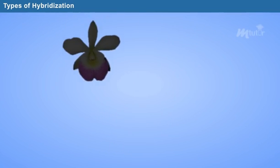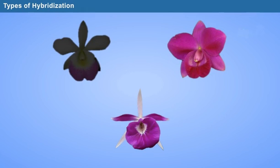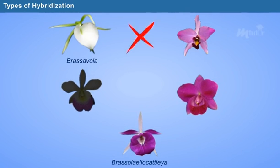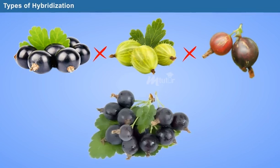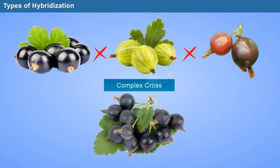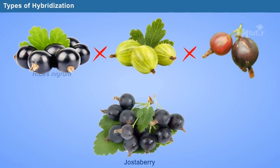The three-way cross involves crossing two inbred parents with a third parent to produce a new progeny. An example is the formation of orchid hybrid Brassolaeliocattleya, produced from Brassavola, Laelia, and Cattleya. When more than two parents are crossed to produce hybrid varieties, it is referred to as complex cross or convergent cross. An example is Jostaberry, produced from crosses involving Ribes nigrum and Ribes divaricatum.